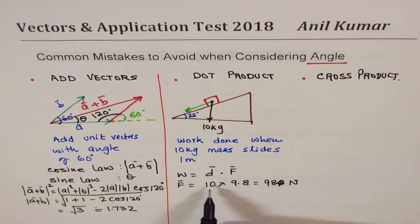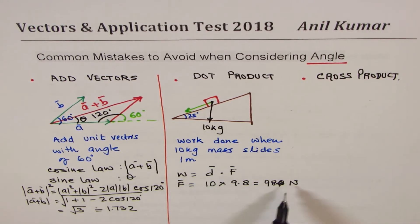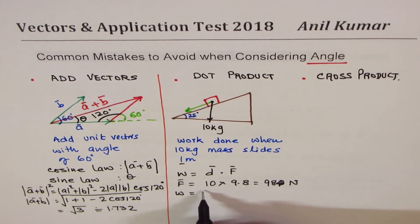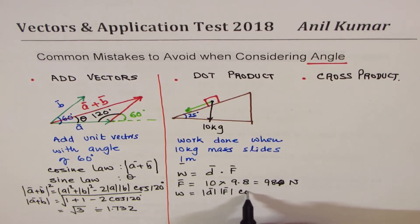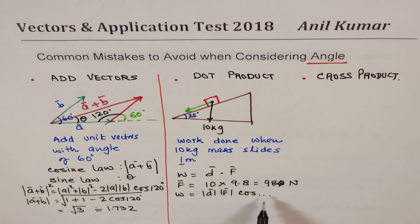So when you multiply by 10, 98 newtons. So you have to convert kg to kg weight or force. Displacement is given to you, 1 meters, no problem. What is the angle? So work done basically is the magnitude of displacement times magnitude of force times cos of angle. Now what is this angle? What is this angle? Many students will just write 25.